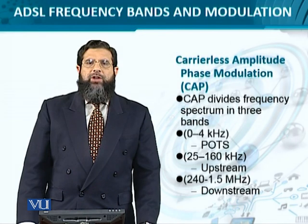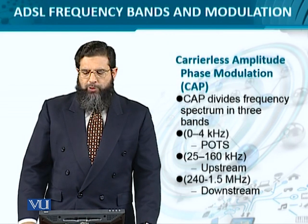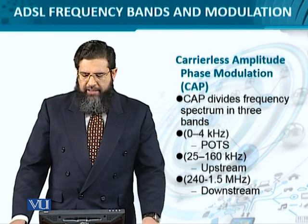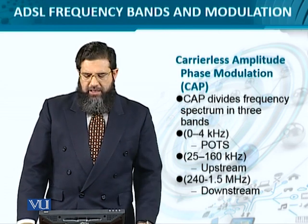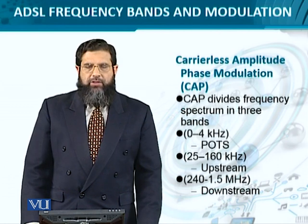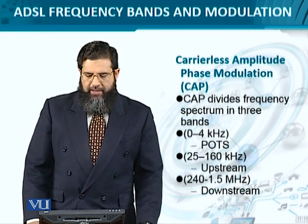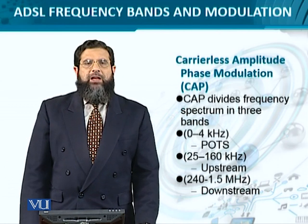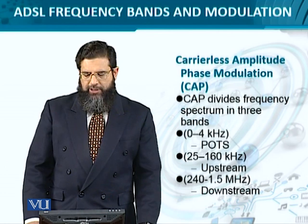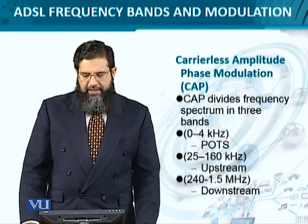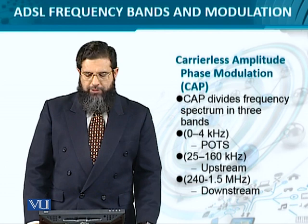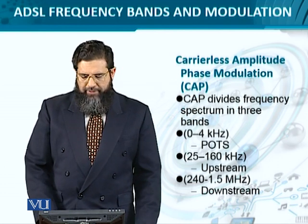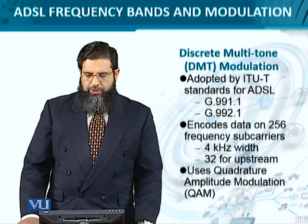Carrierless Amplitude Phase modulation divides the spectrum into three bands: the lowest for voice, then upstream from 25 to 160 kHz with a guard band between upstream and downstream, and finally downstream from 240 kHz to 1.5 MHz.